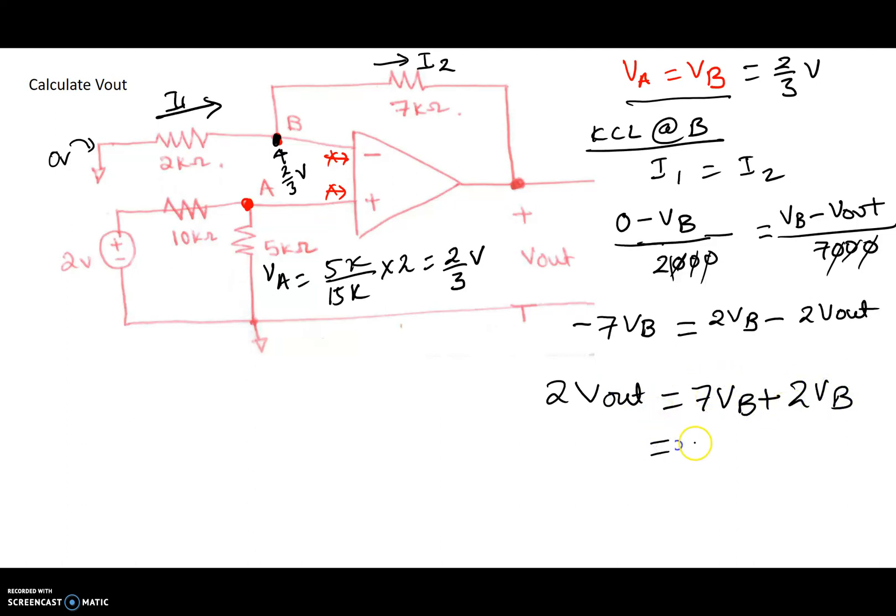In other words, 9 VB is equal to 2 Vout. Therefore Vout equals 9 over 2 times VB. VB we calculated as 2 thirds of a volt, so 9 over 2 times 2 over 3. So we are left with Vout equals 3 volts.